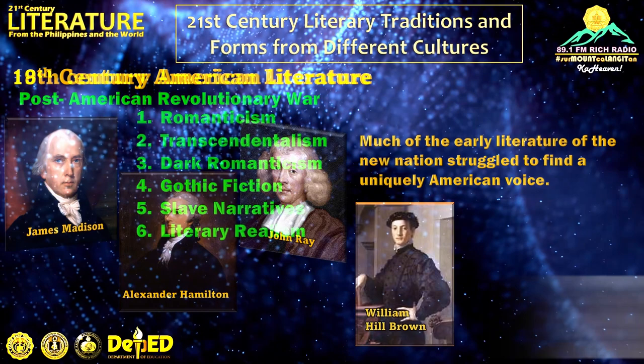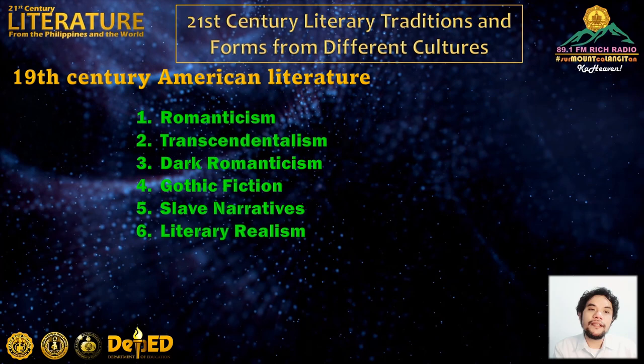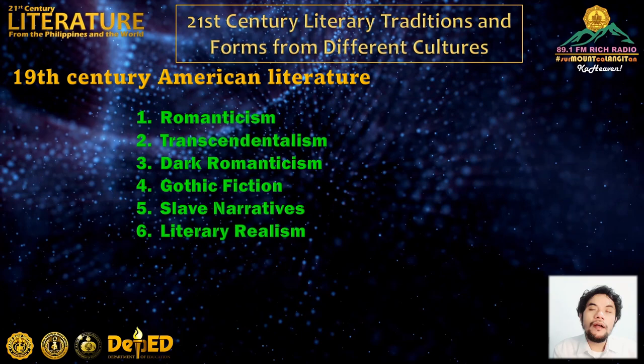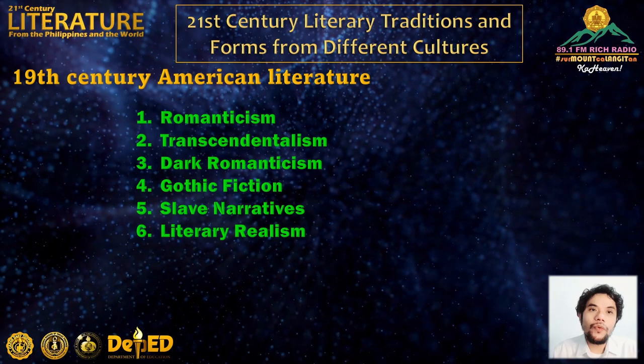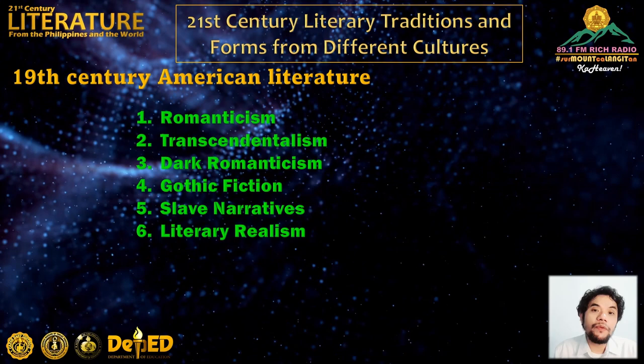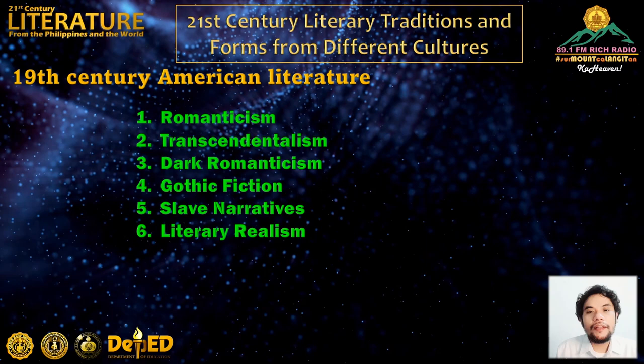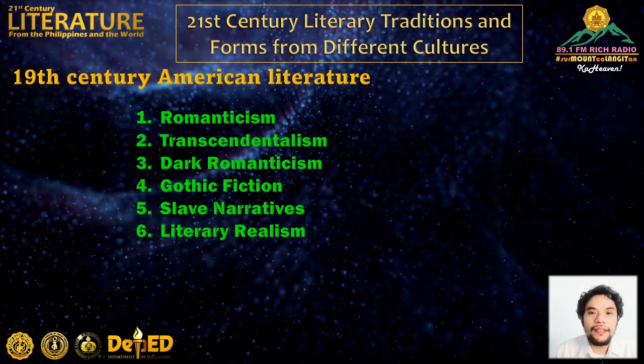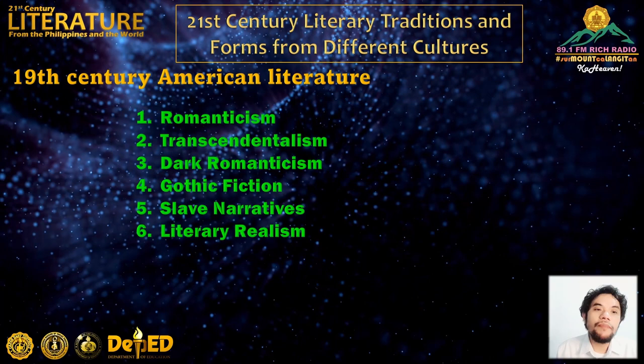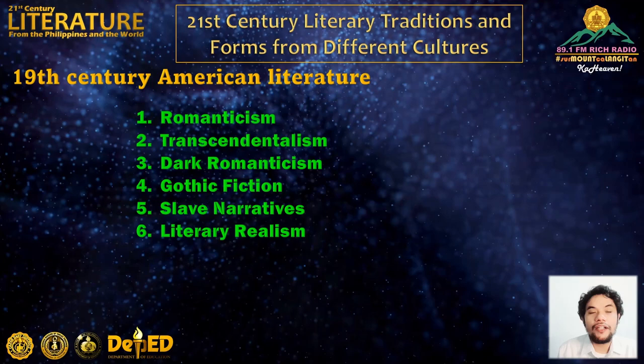19th century American literature was marked by the emergence of literary movements, including Romanticism, Transcendentalism, Dark Romanticism, Gothic Fiction, Slave Narratives, and Literary Realism. Literary movements help categorize authors and works that share similar philosophies, aesthetics, or topics. They divide literary works into groups based on similarities, as opposed to grouping them by period or genre. Some movements are defined by the authors themselves, while others are defined decades or even centuries later.